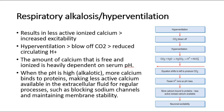For respiratory alkalosis or hyperventilation, this results in less active ionized calcium, causing increased excitability. In hyperventilation, the patient blows off carbon dioxide, causing reduced circulating hydrogen ions. The amount of calcium that is free and ionized is heavily dependent on serum pH. When the pH is high, more calcium binds to proteins, making less active calcium available in the extracellular fluid for regular processes such as blocking sodium channels and maintaining membrane stability. This is how Trousseau's sign occurs in these conditions.